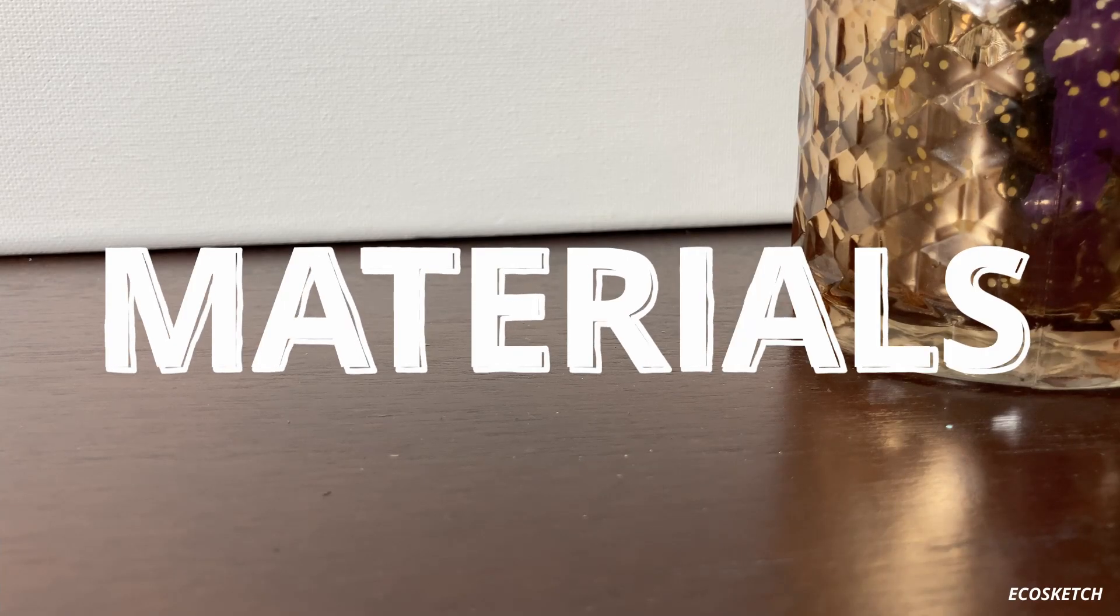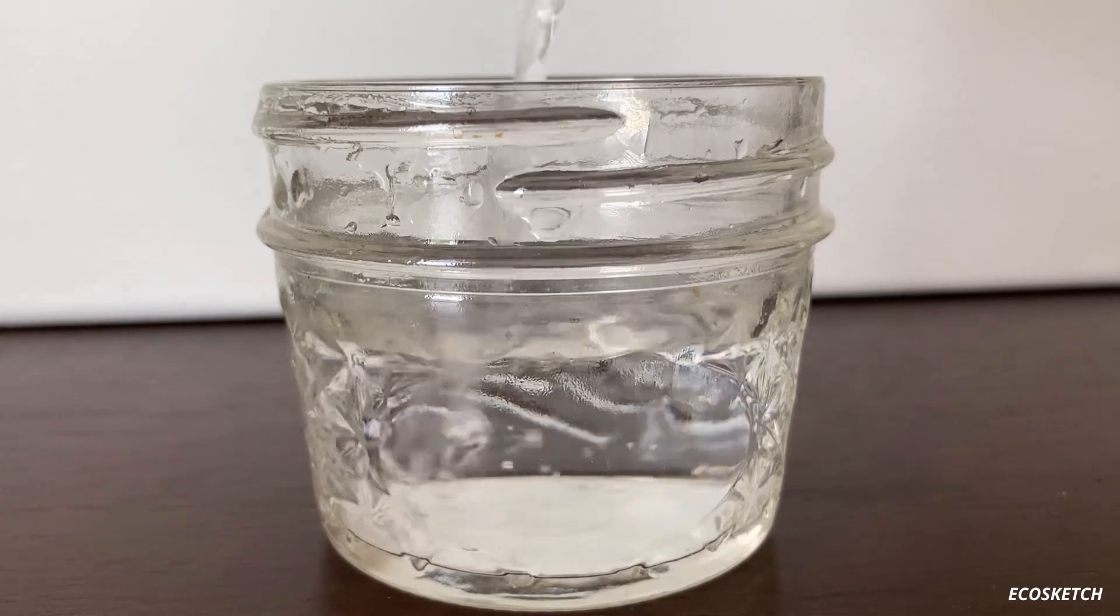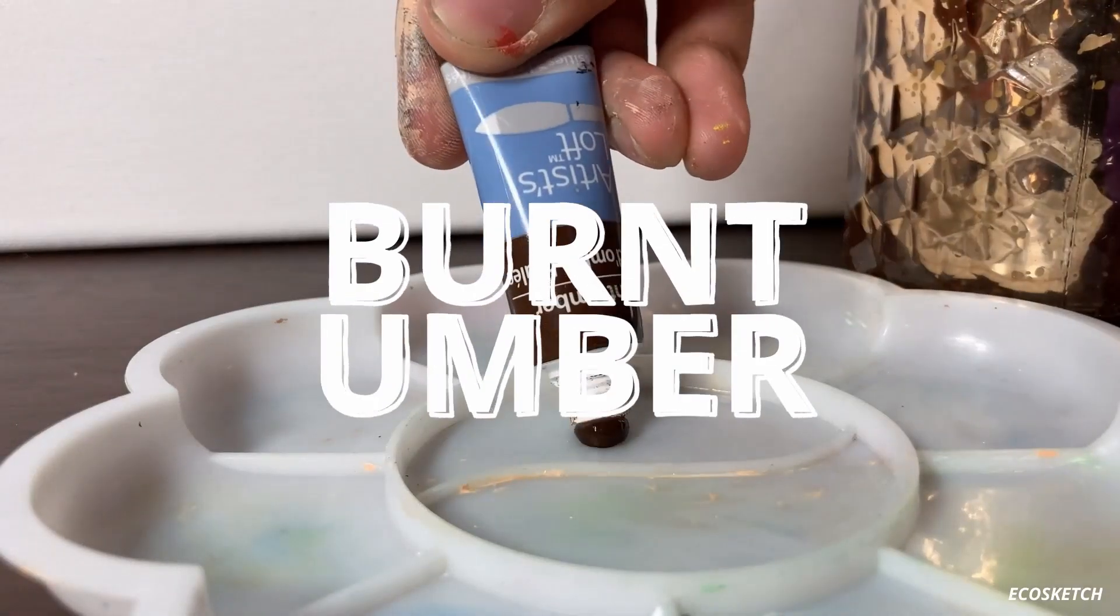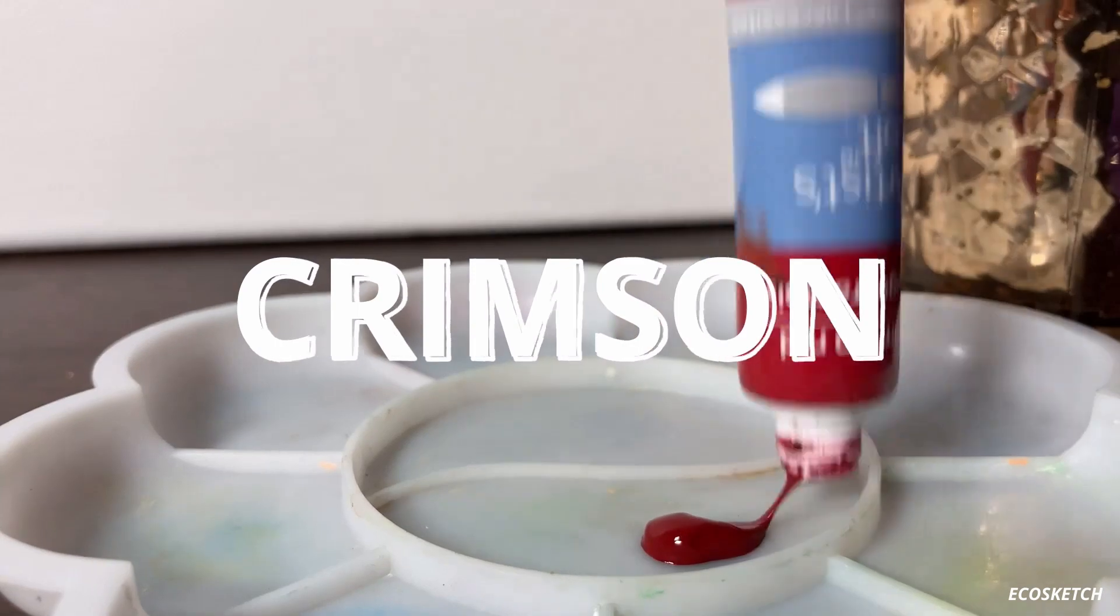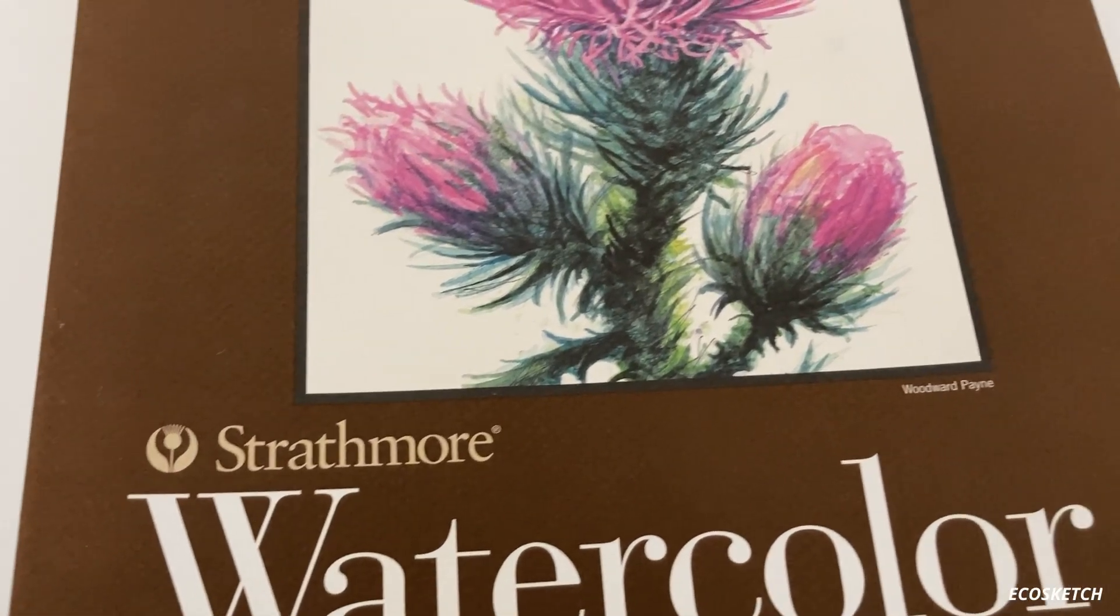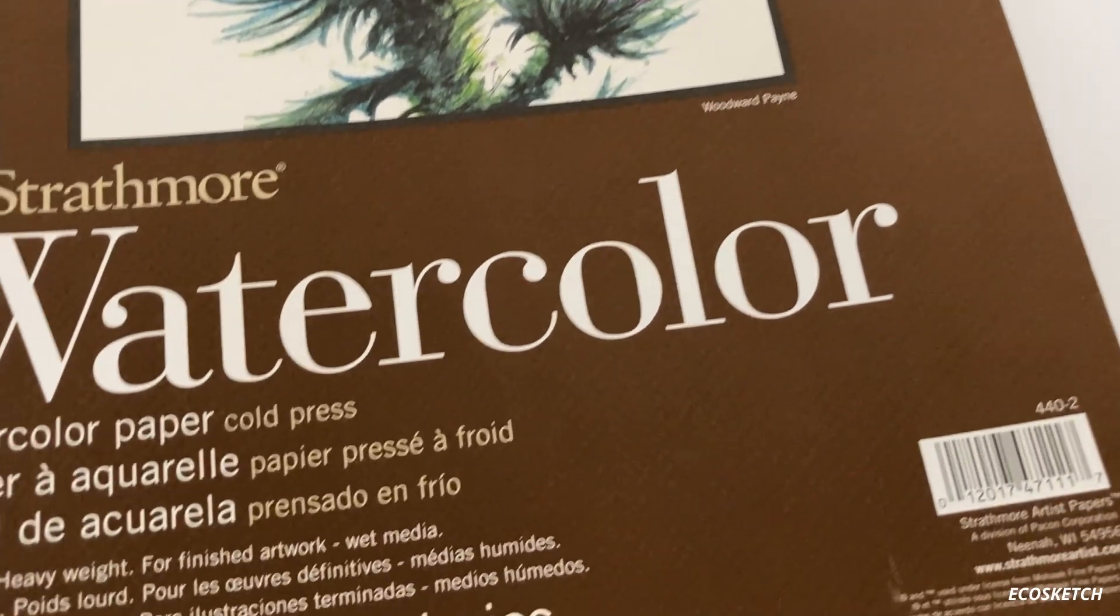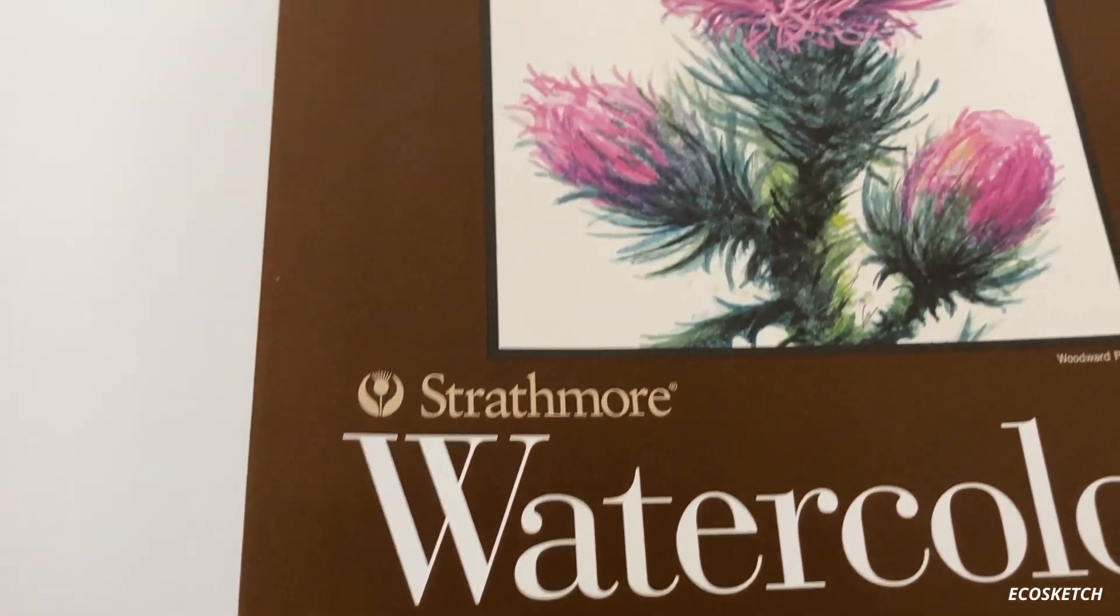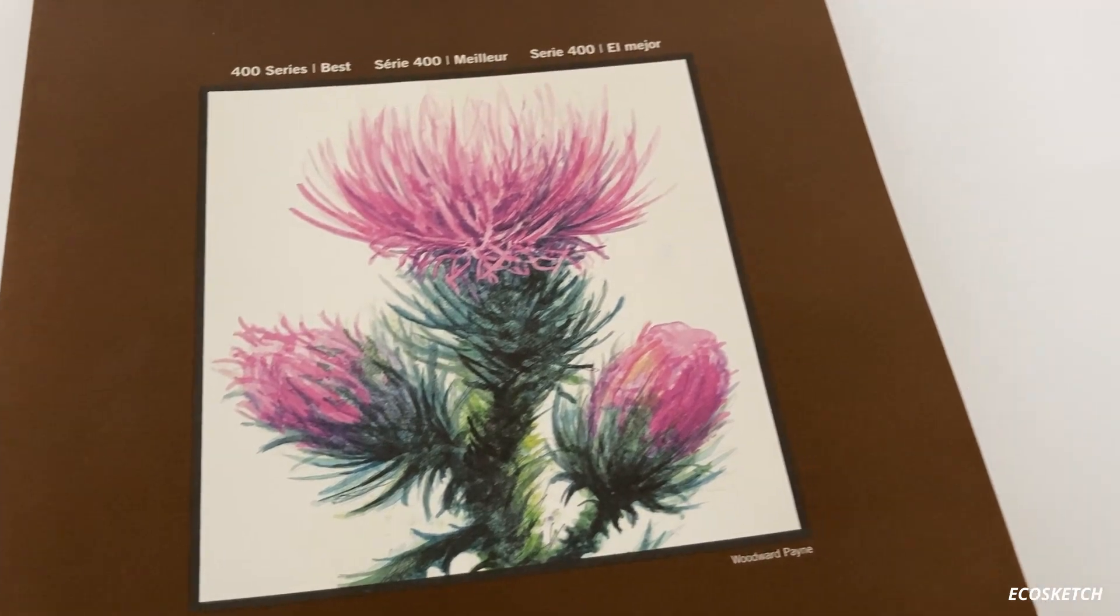The materials you need are a cup of water, a brush, burnt umber, crimson, prussian blue, and I'm going to be using the Strathmore Series 400 cold press watercolor paper that I bought at Michael's, as well as an ultra-fine black Sharpie.